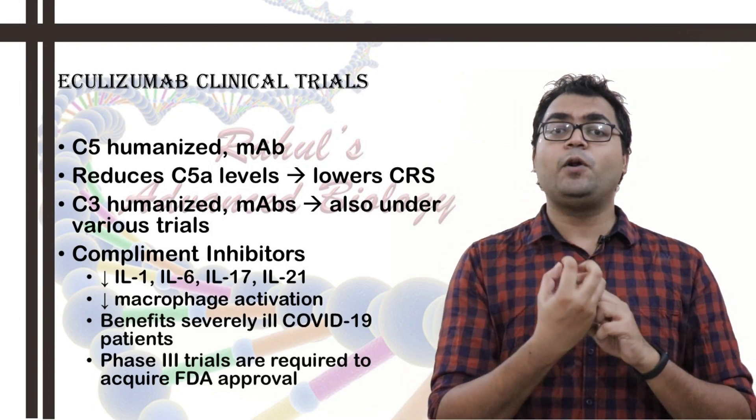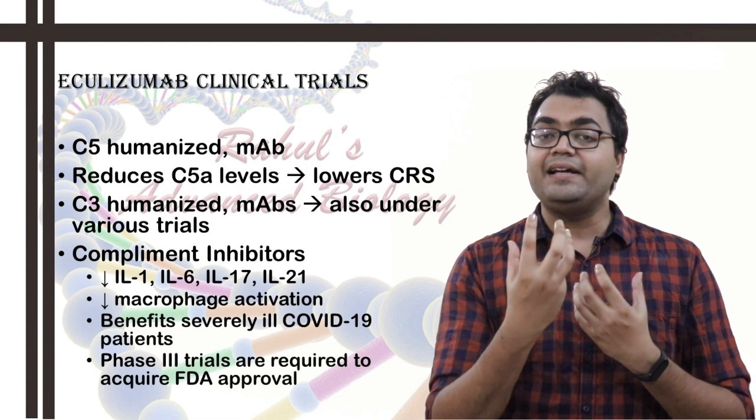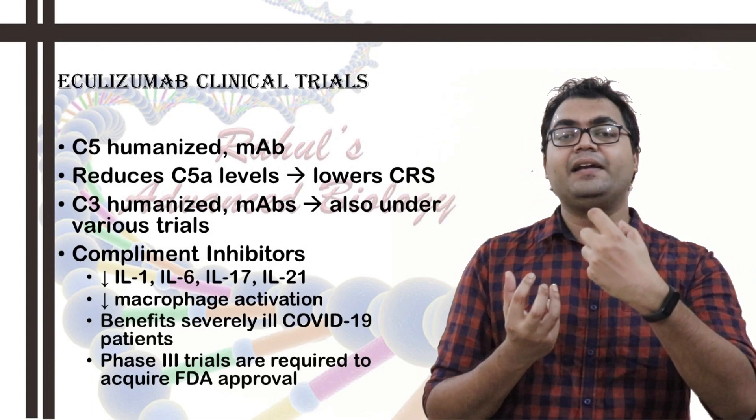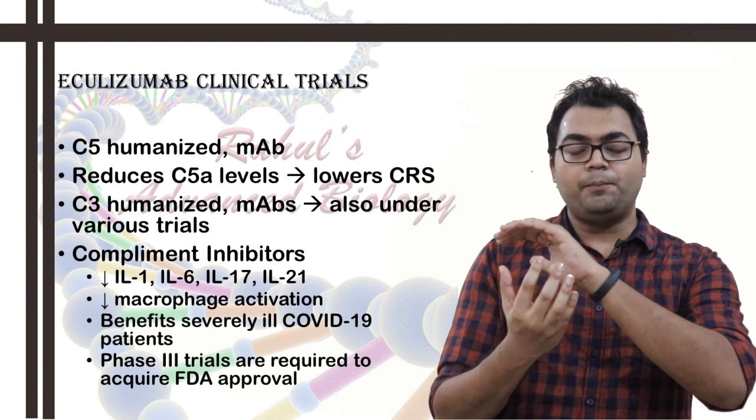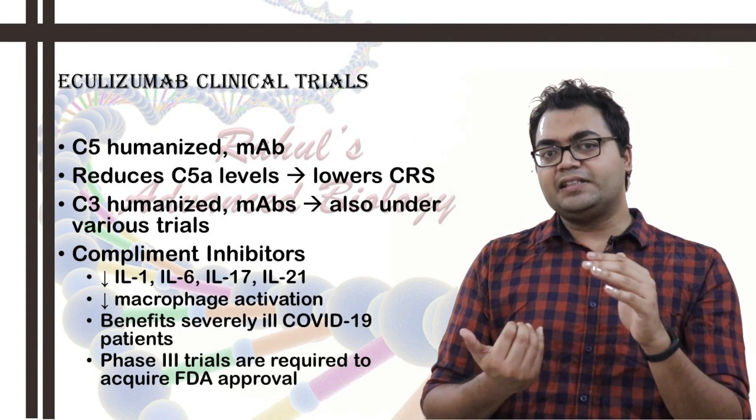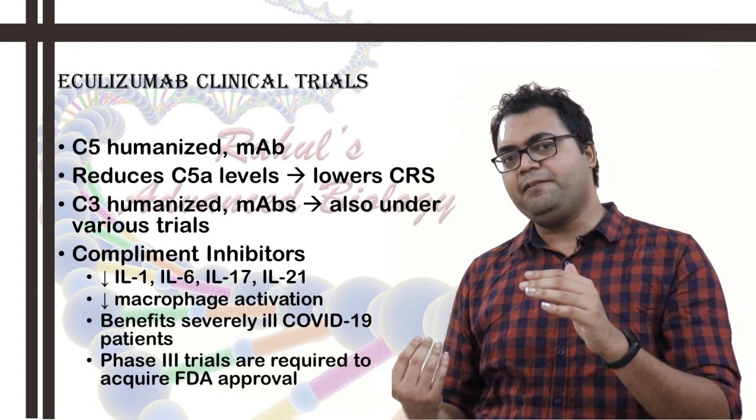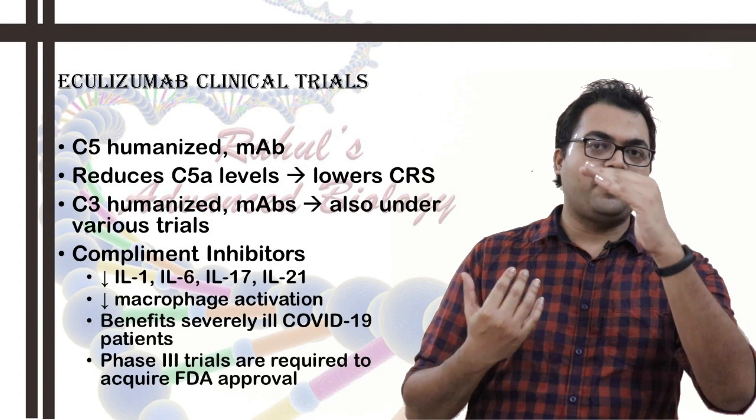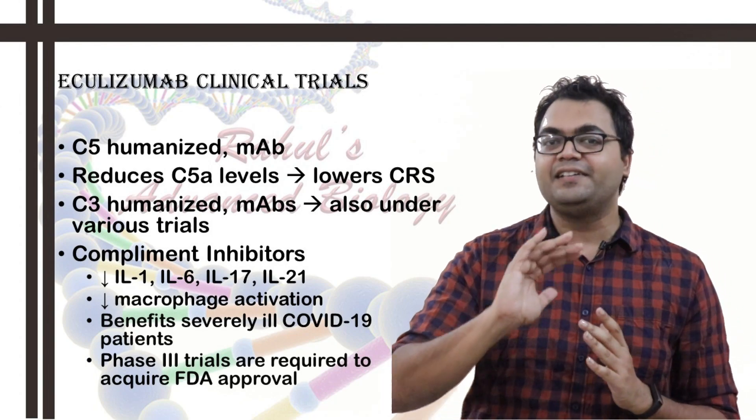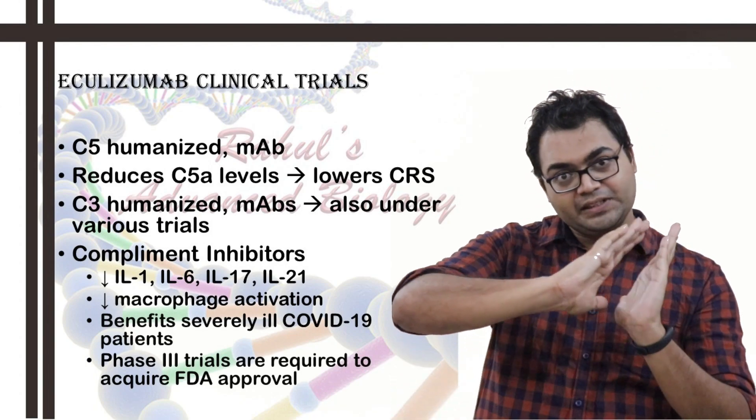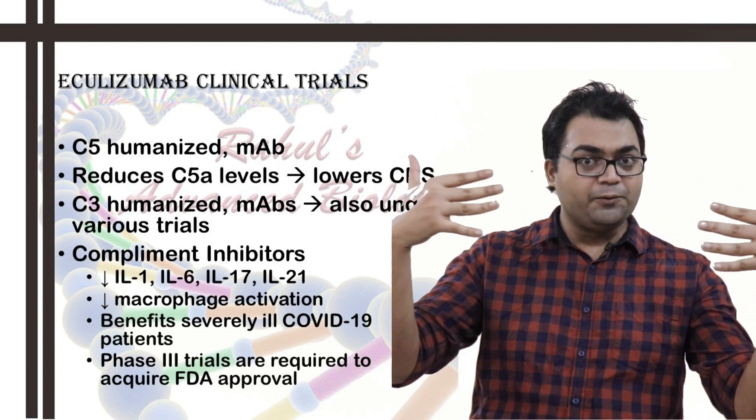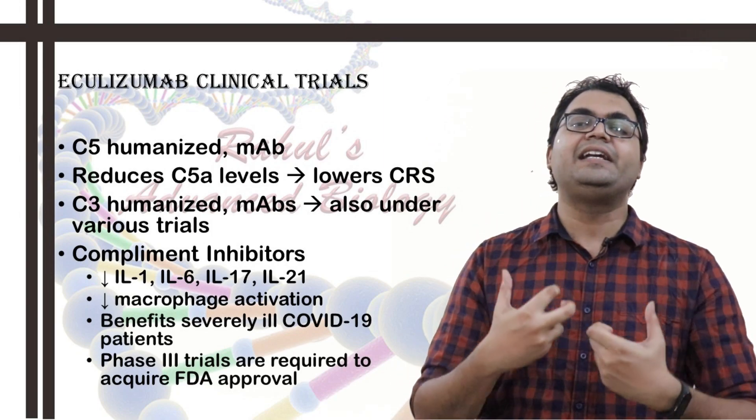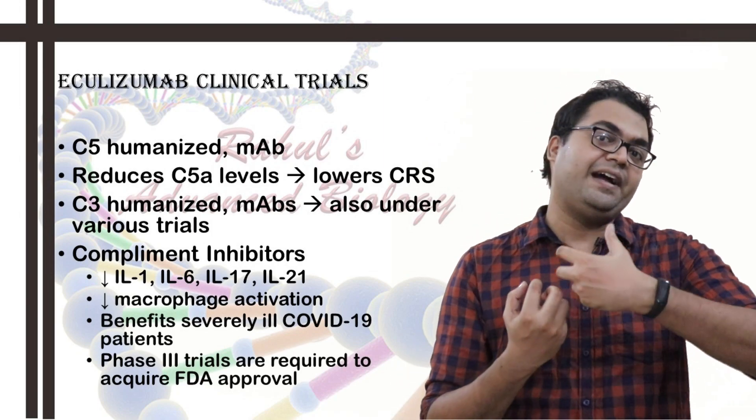Same way, C3 blockers can be a better agent, because you are upstreamly, or you can block it, you are really blocking the complement pathway upstream. So, it has been found in research that blocking of C5 is less superior, or is inferior to the blockage of C3, because once you block C3, then the pathway stops then and there only. So, it converges all the pathways that converge into C3, into becoming, or into forming C3 convertases, which will cleave C3 into anaphylatoxin, C3a.